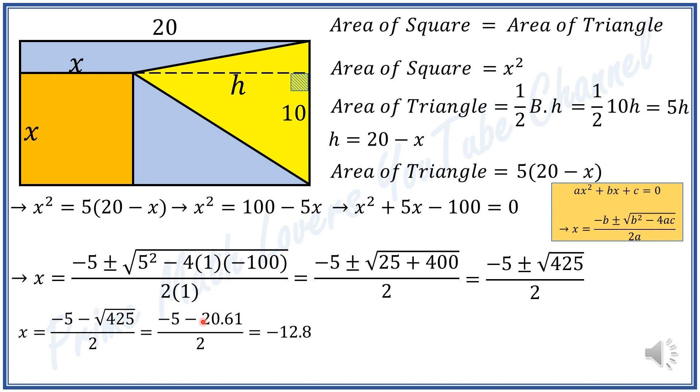Which equals negative 12.8. But negative 12.8 is not viable since x represents length and cannot be negative. Therefore, we go for the other solution. This is not acceptable.